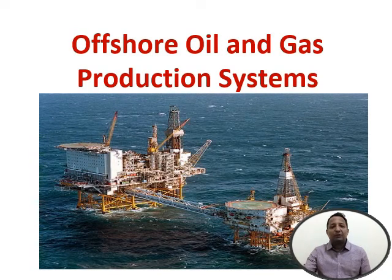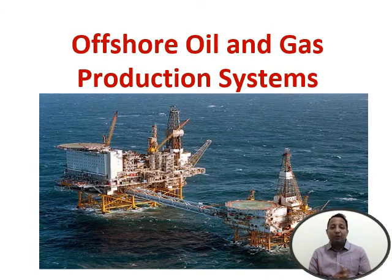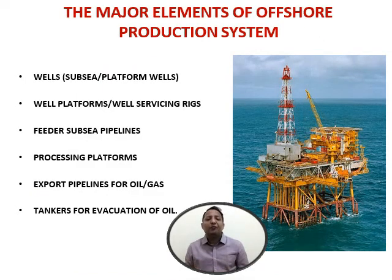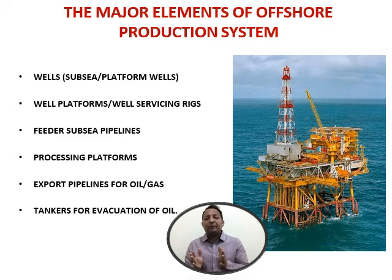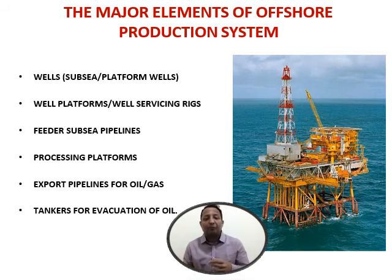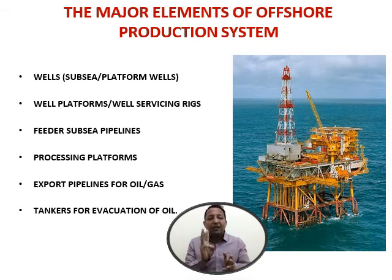This is the offshore oil and gas production system. It's a big subject so I am covering it shortly so you understand what it means. When you design the system, there are certain terminologies. The major elements of an offshore production system include wells, well platforms, well servicing rigs, feeders and sea pipelines, processing platforms, export pipelines for oil and gas, and tankers for evacuation of oil. There are three sides in the oil and gas industry: upstream, midstream, and downstream.